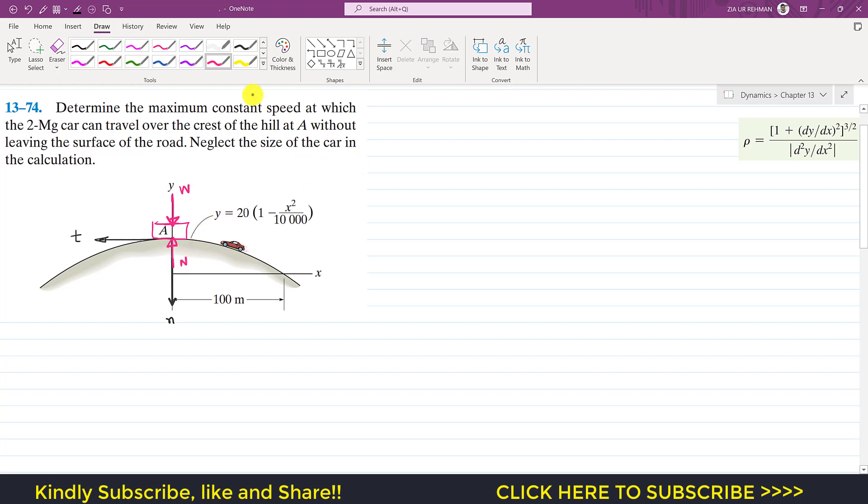If we apply the summation of forces along the normal direction equals to M A_N, so as we can see that the weight is acting in the positive N direction, so I will write W minus N and this is equal to the mass times A_N and A_N is V squared divided by rho, and rho is the radius of curvature at that point A.